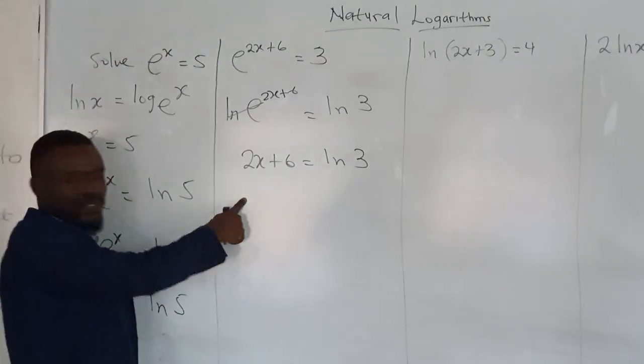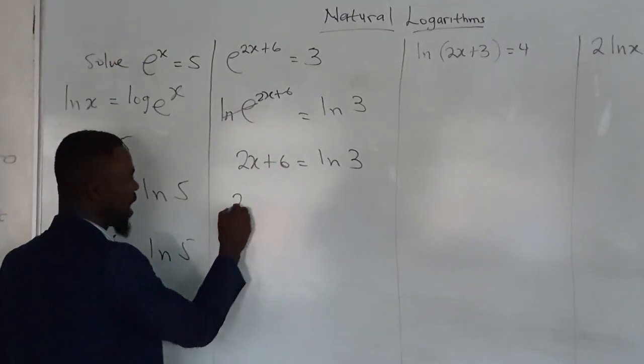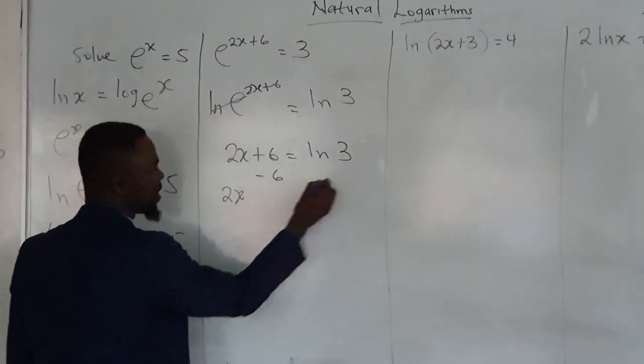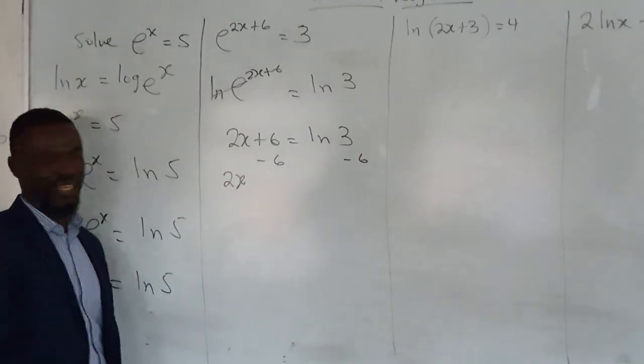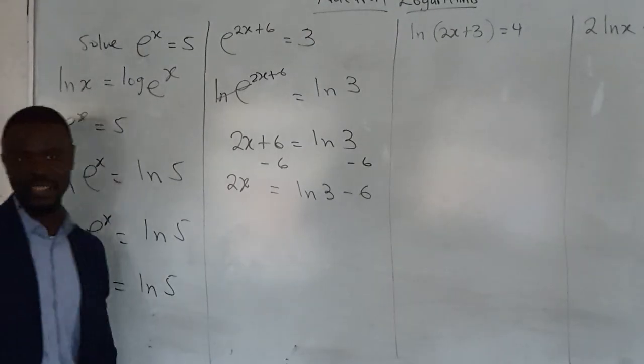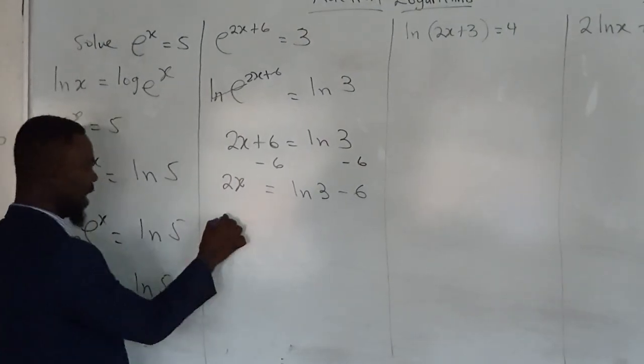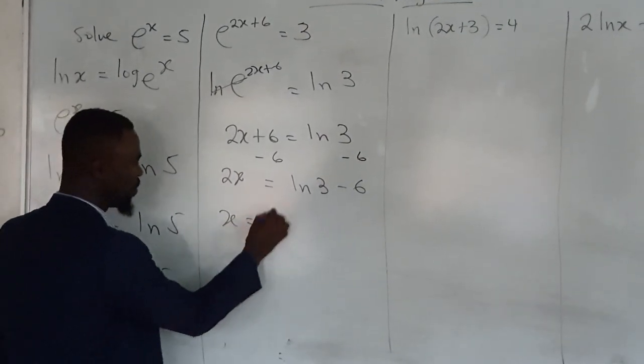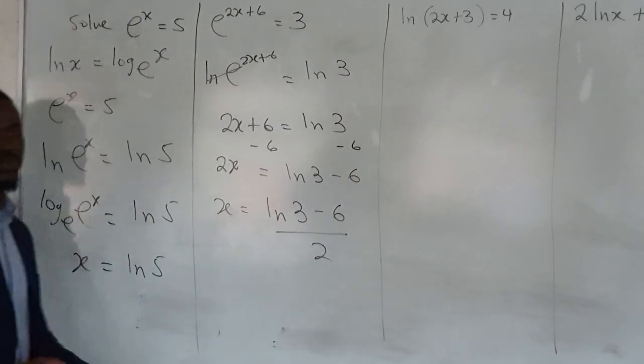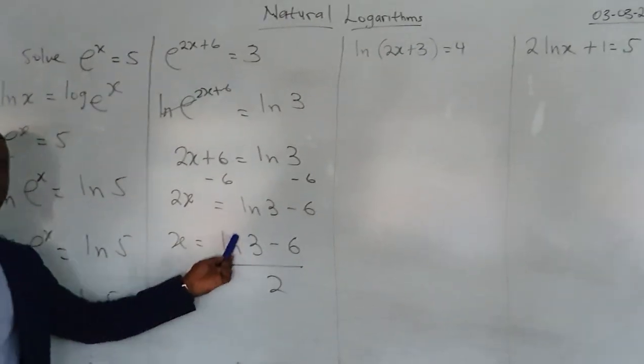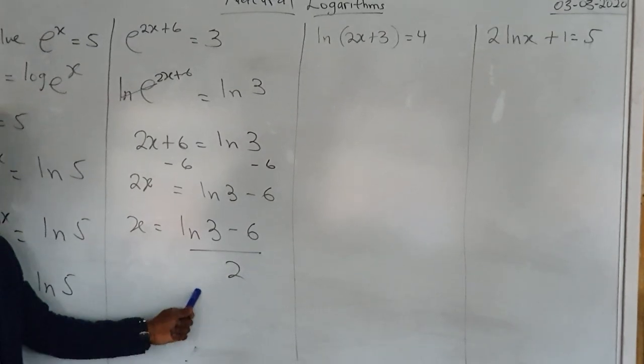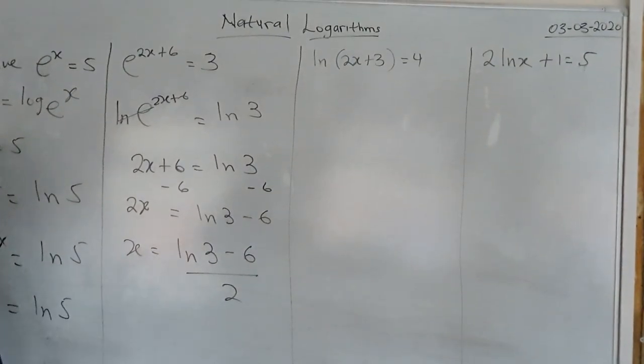So we'll be left with 2x + 6 = ln 3. We want x, so in this case, we would have 2x. We send the 6 to this side, or it's the same as ln minus 6. So 2x will be equal to ln 3 - 6. Therefore, x will become (ln 3 - 6)/2. And at this point, your calculator will give you the answer. So I'm not going to waste time to put this on the calculator.